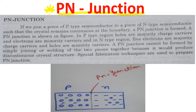Now, when a single crystal of germanium or silicon is doped in such a way that one half is doped with trivalent impurity and the other half is doped with pentavalent impurity, then the boundary between P-type and N-type materials is called P-N junction.